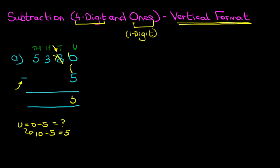Let's write that down. Now we're going to do the tens. For the tens, we've got 7 — it's not 8 anymore, we crossed out 8 — it is 7 minus 0, which is 7. The hundreds column: we've got 3 minus 0, the answer is 3. And lastly, the thousands column: we've got 5 minus 0, which is 5. Therefore, the answer is 5,375.